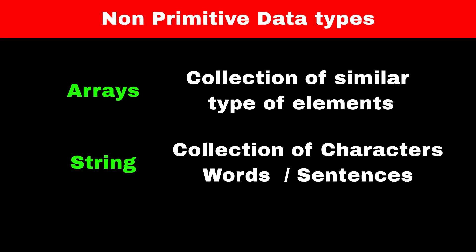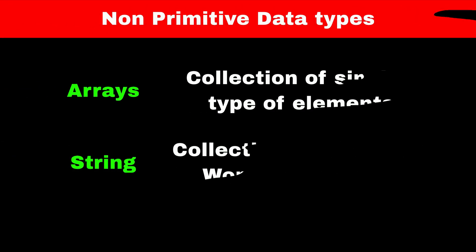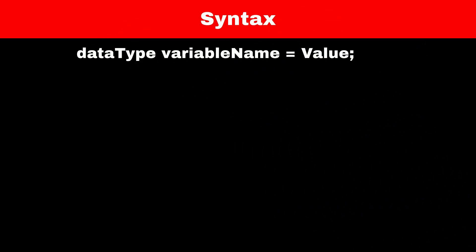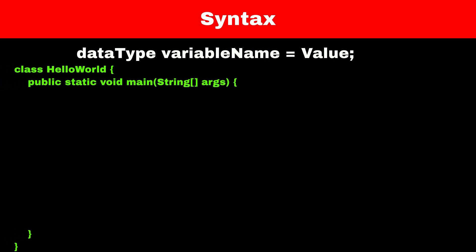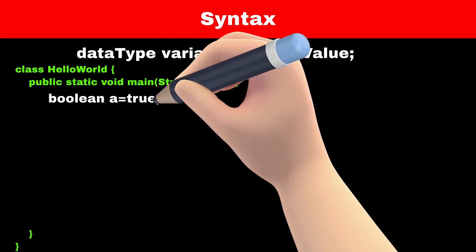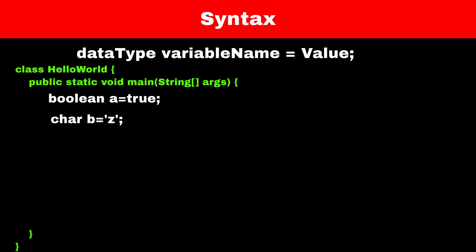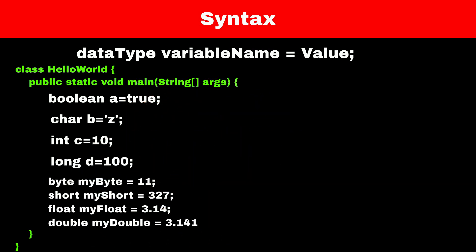We will see those data types in the future. The syntax for declaring a data type with a variable is the same for all data types: first comes the name of the data type, then the name of the variable, then the equal-to operator, then the value. For example: boolean a = true; char b = 'j'; int c = 10; long d = 100; and so on. You can see the syntax on your screen.